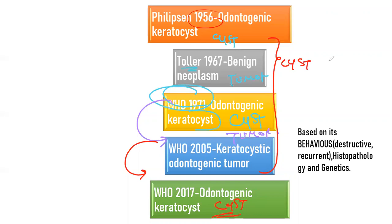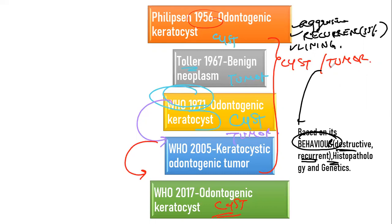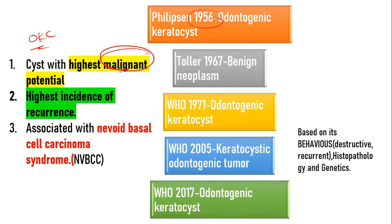The basic question is why, and the answer is because of its behavior. It is highly aggressive, destructive, and recurrent. This cyst is locally aggressive — it invades surrounding tissues and is highly recurrent, almost 33%. Histopathologically, the lining has innate growth potential, and in the genes you see mutation in specific genes, for example the PTCH gene. The reason why you need to study the OKC is because it has high malignant potential, high rate of recurrence, and an association with the nevoid basal cell carcinoma syndrome.